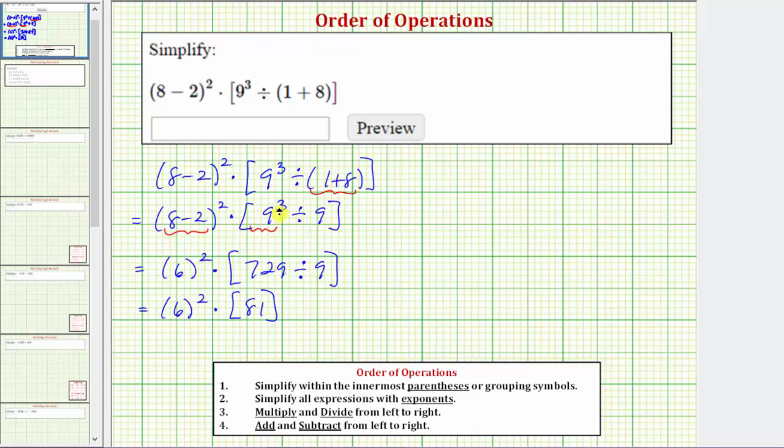Now I do want to show how we could have simplified nine cubed divided by nine a different way. If we write nine cubed divided by nine in fraction form, we'd have nine cubed over nine to the first. When dividing and the bases are the same, remember the exponent rule is we subtract the exponents. This is equal to nine raised to the power of three minus one, which equals nine squared, which equals eighty-one.